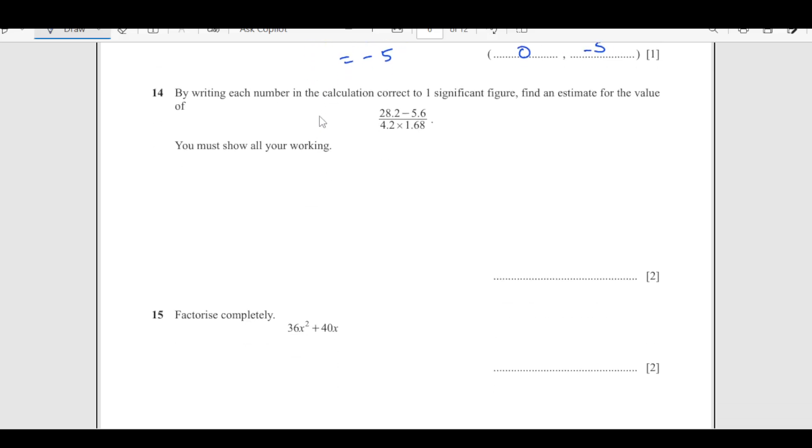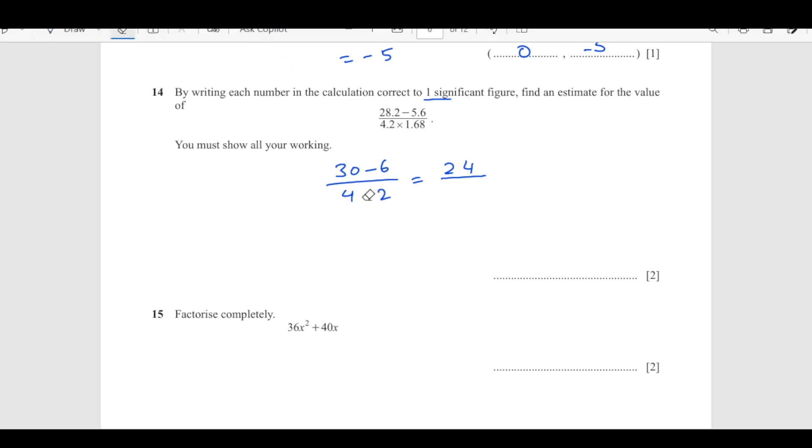Number 14: by writing each number in calculation correct to one significant figure, estimate the value of this. To estimate to one significant figure, this is going to be 30 minus 6 over... I am sorry, this is times, not minus. So this is times 4 times 2, which is 8. Answer is 3.